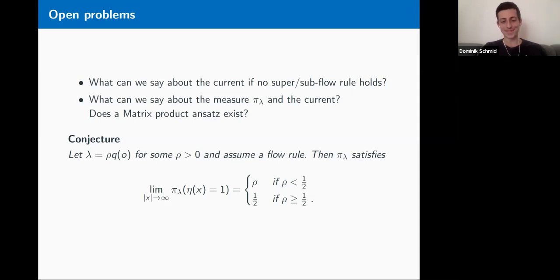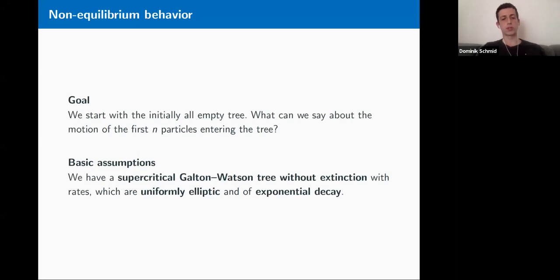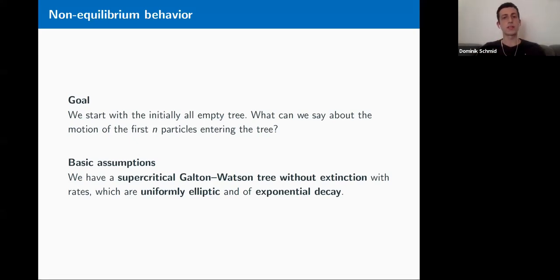Let's move to the second part: the non-equilibrium situation. We start with our tree initially completely empty and wait for the first n particles to enter the tree. What can we say about the motion of these first n particles? For this we need a more special setup. We consider a supercritical Galton-Watson tree without extinction, with uniformly elliptic and exponentially decaying rates.